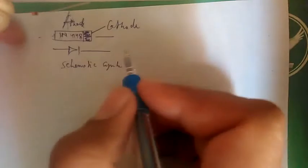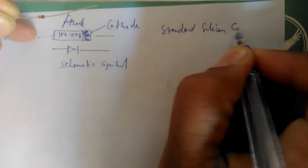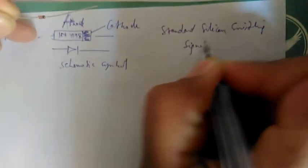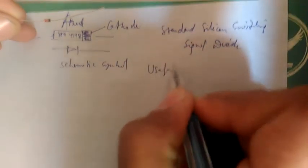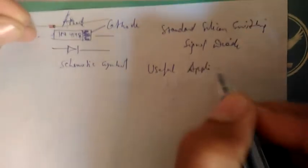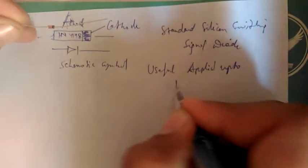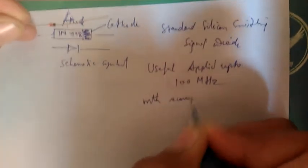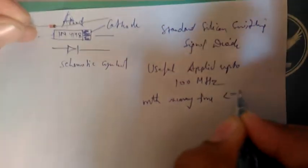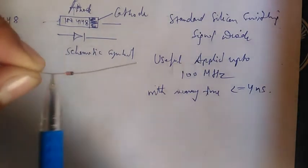This diode is a standard silicon switching signal diode, and it is useful in applications up to 100 megahertz, with a recovery time less than or equal to 4 nanoseconds. Now we can measure how much value is shown by the multimeter.